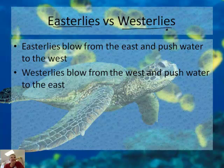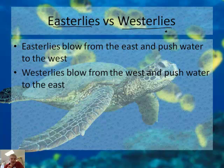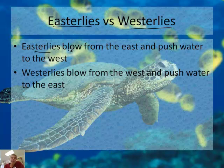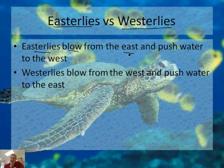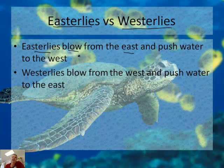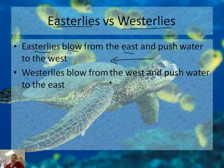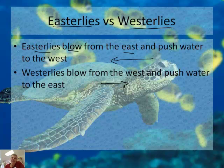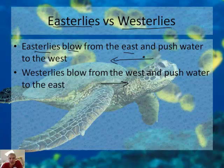We have a couple of definitions that confuse students: easterlies and westerlies. An easterly is wind that blows from the east — but it blows toward the west. And a westerly blows from the west toward the east. So an easterly blows west, and a westerly blows east. It sounds backwards, but that's how it works.